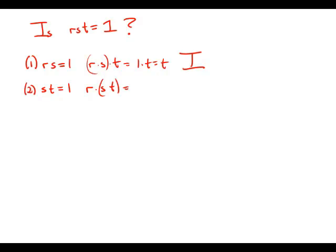Again, we'll group the last two. They equal 1. So that's R times 1. That equals R. Statement number 2 gives us absolutely no information about the value of R. Again, it could be any number on the infinity of the number line. It could be 1, but it doesn't have to be. So statement number 2 by itself is also insufficient.